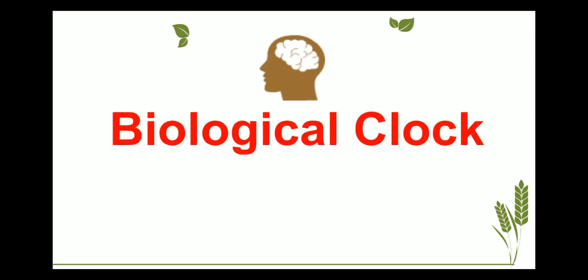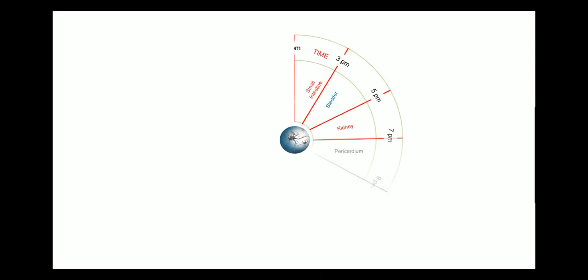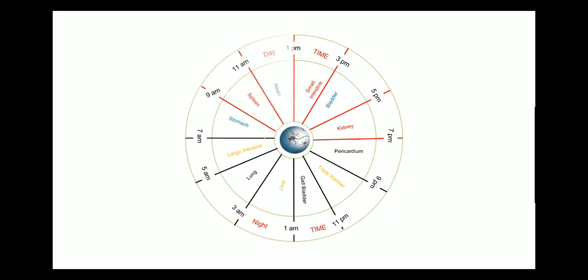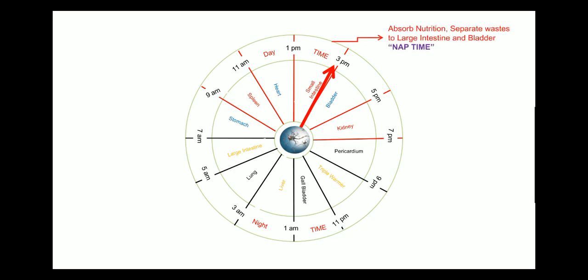Biological Clock: The biological clock is a series of events that occurs according to time, and each and every organ of the body has its own rhythm. According to that time, they are involved in the regulation of various functions in the body. For example, between 1 to 3 pm, the small intestine is active, performing functions like absorption of nutrition and suppression of waste to the large intestines and bladder. This is also known as nap time — a short nap of less than 20 minutes can accelerate the beneficial functions of the small intestine.